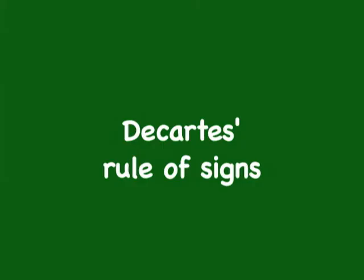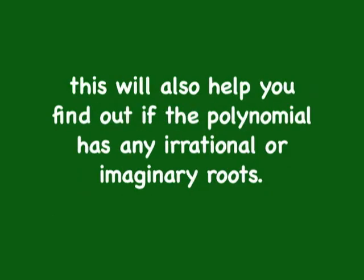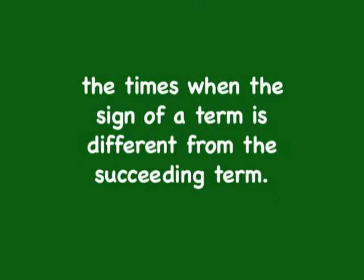Descartes' Rule of Signs states that the variation of signs in a polynomial will help you determine the number of positive and negative roots it has. This will also help you find out if the polynomial has any irrational or imaginary roots. The term 'variation of signs' means the times when the sign of a term is different from the succeeding term.